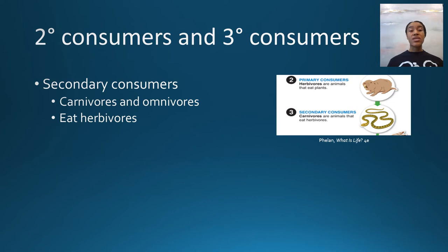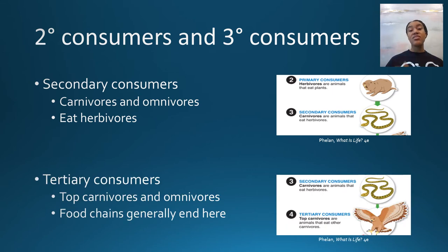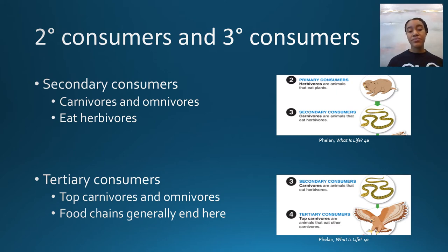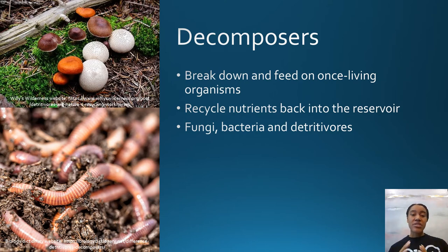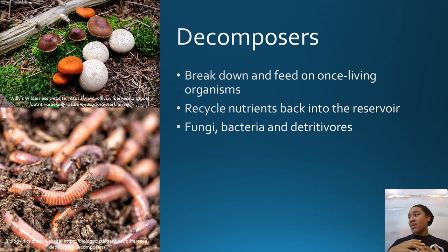The next rung of the tier are secondary consumers — carnivores and some omnivores that eat the primary consumers, and these are heterotrophic as well. Further up the chain are tertiary consumers, usually the top predators, which are carnivores that eat the secondary consumers. We also have a very special and extremely important group called the decomposers — organisms that break down once-living material and basically recycle nutrients back into the environment. Without decomposers, there would be dead organic material everywhere; they play a vital role in cycling what's lost due to death back into the food chain.